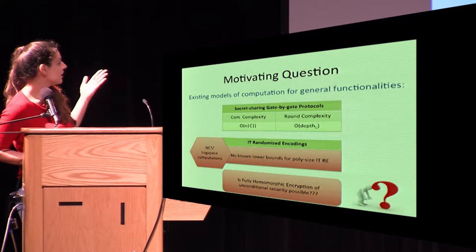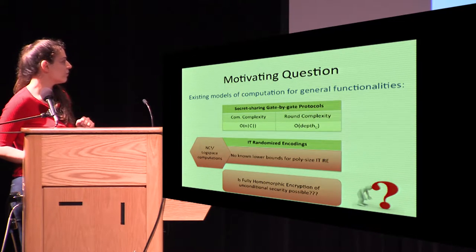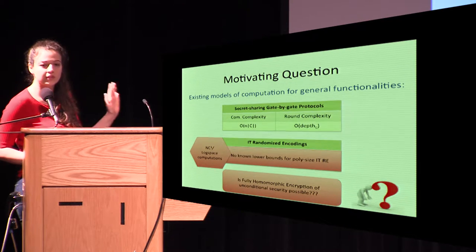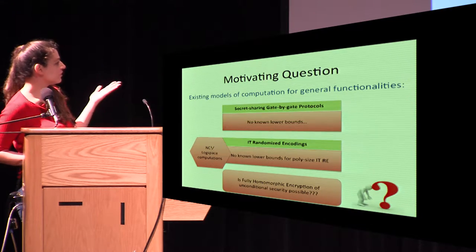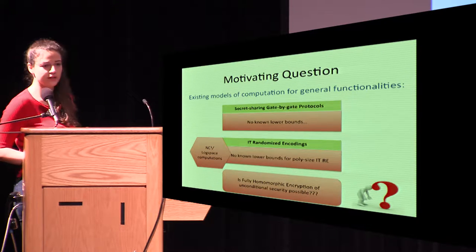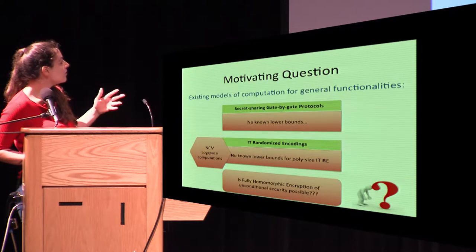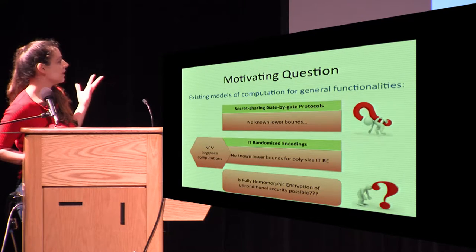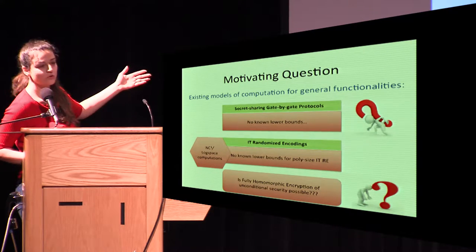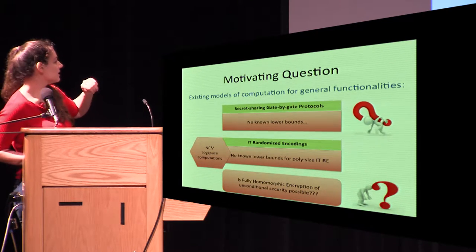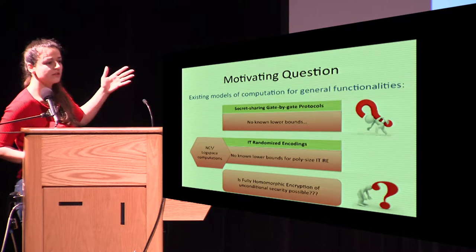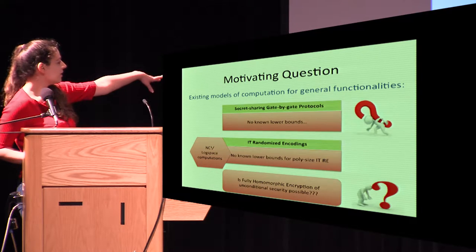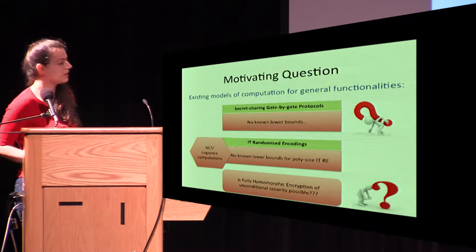We don't have any lower bounds for poly-size information-theoretic randomizing codings, and we don't know if they exist. Moreover, we don't have any lower bounds for the gate-by-gate protocols. So let's tackle this problem and see if we can say something for gate-by-gate protocols. There are all these open questions, and let's dig in to see if we can partially answer them.